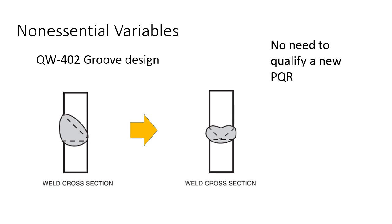Here's an example of groove design. On the left-hand side we've got the cross-section of a single bevel groove weld. Let's say we want a new groove design using the same filler materials, the same base metals — everything else is the same — but the welders come to us and say they need to go to a double bevel groove weld, a single bevel on both sides of the weld joint. What have we changed metallurgically, mechanically, chemically? Nothing. The only thing we're changing is the direction we're depositing the weld metal. From a mechanical, metallurgical, physical standpoint, we have done nothing to that weld — the only thing we've changed is the configuration.